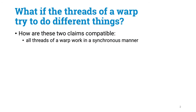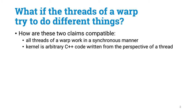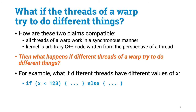In the previous parts we have said many times that all threads of a warp work in a synchronous manner. But our kernel is some C++ code written from the perspective of an individual thread. So what if there is an if-else statement somewhere in the kernel, and the condition is true for some threads and false for others? Or what if we have a for loop that runs for a different number of iterations in different threads? Or what if we call a recursive function that does completely different things for different threads?